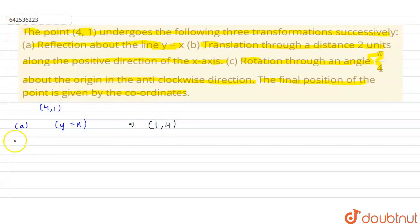Moving on to the next step. In the next step, the point is translated 2 units along the positive direction of x-axis. This will increase the x-coordinate by 2. So the coordinates will become (1+2, 4), which finally becomes (3,4).